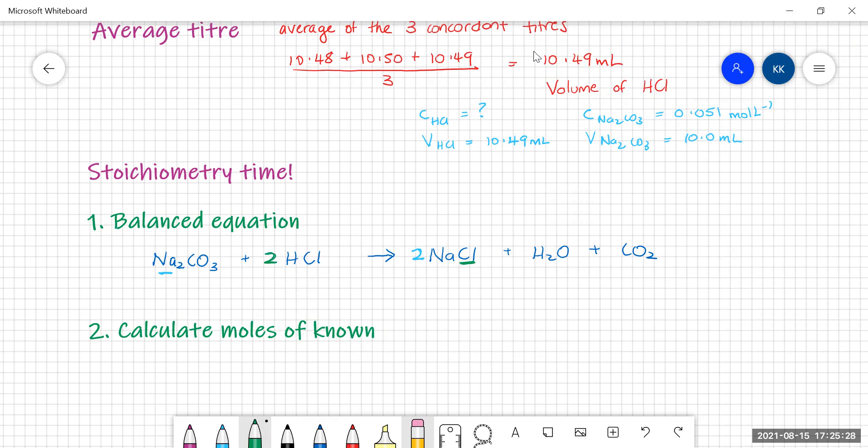Everything else balances. All we've got to do is put in our states. So sodium carbonate, we're using a solution, so that's aqueous. Acids are aqueous. The sodium chloride will be aqueous. Water is a liquid and carbon dioxide is a gas. Alright, we have our balanced equation.